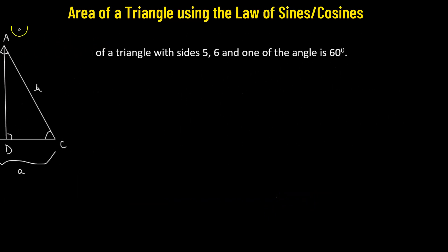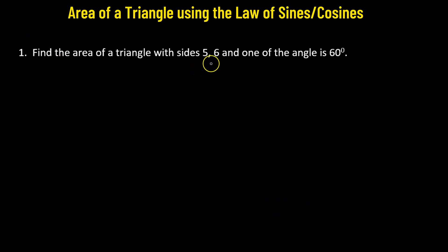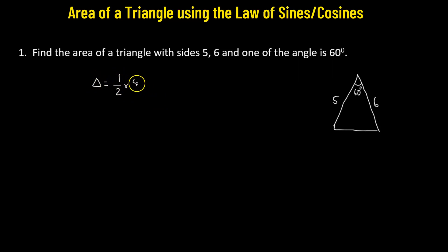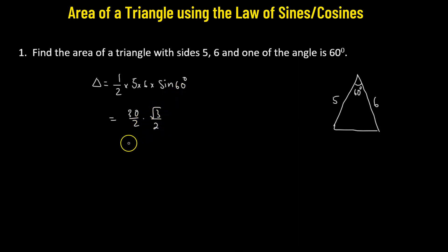Now let's apply this formula. Problem number one: find the area of a triangle with sides 5 and 6 and one of the angles is 60 degrees. We assume the 60-degree angle lies between the sides of length 5 and 6. So the area equals half times 6 times 5 times sine 60°, which is 30 over 2 times √3 over 2, giving us 15√3 over 2 square units.